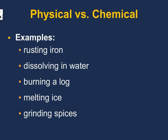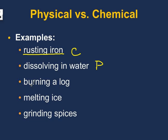Let's look at some examples. Rusting iron — iron is normally a metallic color and it turns red when exposed to air. Is that an unexpected color change? Yes, so that is a chemical change. Something dissolves in water — if I take salt and put it in water, do I have anything new? I have salt water, but it's still just salt and water, so that's a physical change. If I burn a log, is it creating light? Yes. Is it creating heat? Yes. Is it turning into something entirely new? Yes. So that would be a chemical change.